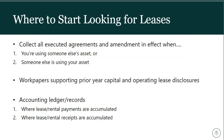Where do you start looking for leases? First, collect all executed agreements and amendments in effect where you're either using someone else's asset or someone else is using your asset. Consider reviewing work papers prepared in prior years for capital and operating lease financial statement disclosures, keeping in mind that you may have only disclosed material leases. Also review your accounting ledger to assist in capturing where lease and rental payments are accumulated if you're a lessee, or where lease and rental receipts are accumulated if you're a lessor. Document this process thoroughly as your auditors will be very interested in verifying the completeness of the population.